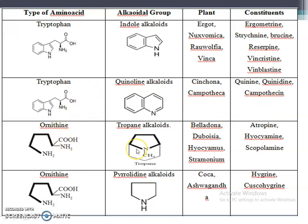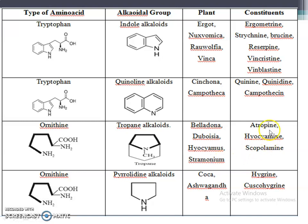The third true alkaloid group is tropan alkaloids. The tropan ring is obtained from the amino acid ornithine. All tropan alkaloids are therefore derived from ornithine. Plants include belladonna, dubosia, hyoscyamine, and stramonium. The main chemical constituents are atropine, hyoscyamine, and scopolamine.